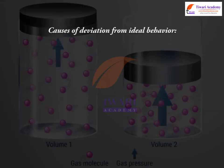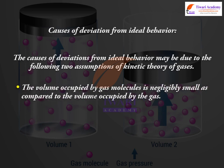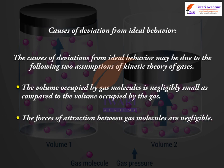Causes of deviation from ideal behavior: The causes of deviations from ideal behavior may be due to the following two assumptions of kinetic theory of gases. First, the volume occupied by gas molecules is negligibly small as compared to the volume occupied by the gas. Second, the forces of attraction between gas molecules are negligible.